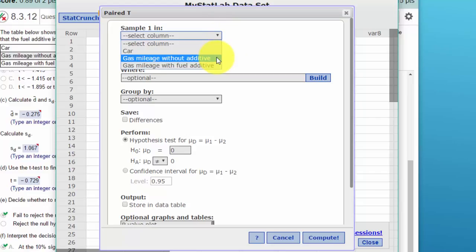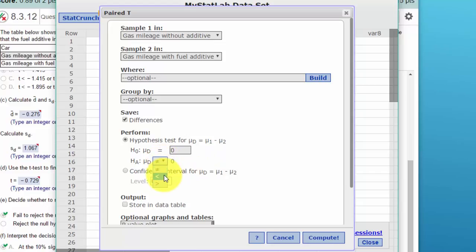So we've got mu1 is gas mileage without additive, mu2 with additive. Go ahead and click the differences, and I'll show you why that will save you some time. Now we've got to set up our hypothesis. Remember that in StatCrunch and other statistics software, we only test for equality for the null. And if we've got a greater than or equal, if the equality is significant, then the greater than portion will also be significant.